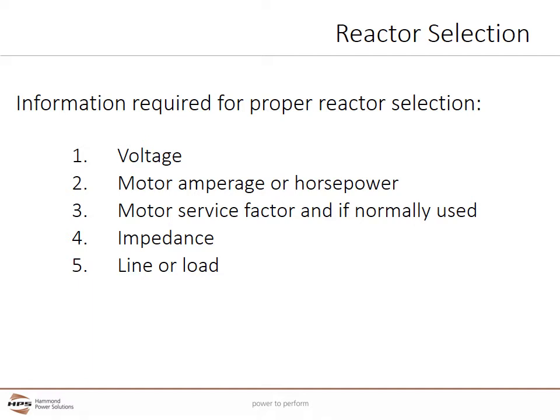There are typically five main pieces of information required for proper reactor selection. More information may be needed, but this information will typically be sufficient for many applications. Number one: the system voltage. Number two: motor amperage or horsepower. Number three: the motor's service factor and if this service factor will normally be used. Number four: impedance, typically defined as 3% or 5% in North America. Number five: will the unit be used on the VFD's line or load side?